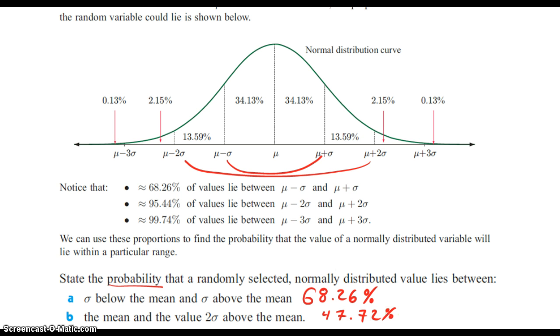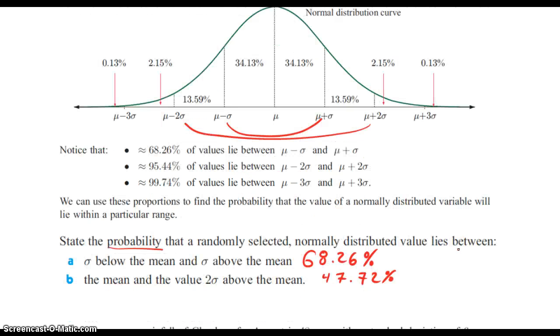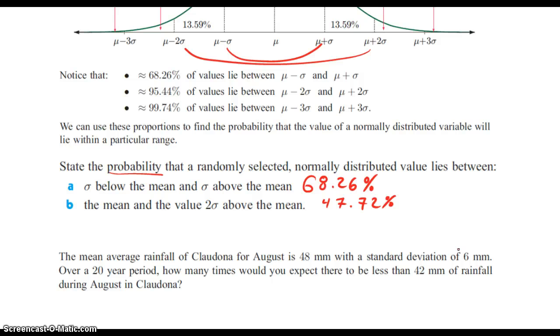Let's try another one that's very similar. If you scroll down here, the mean average for this place in August is 48 millimeters with a standard deviation of 6 millimeters. Over a 20-year period, how many times would you expect there to be less than 42 millimeters of rainfall?